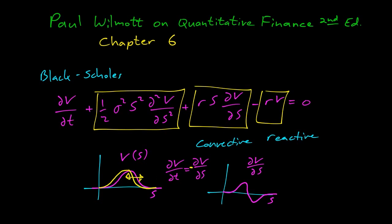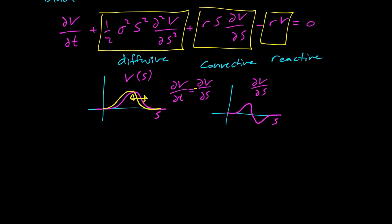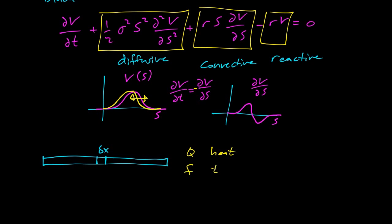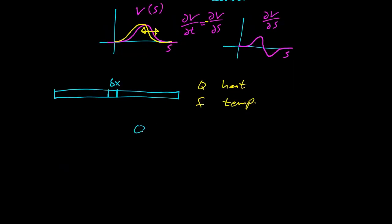The first term is a diffusive term — diffusion. From physics, consider a one-dimensional bar with a small piece of width delta x. There's q measuring heat and f measuring temperature. The simplest relation is q equals f times delta x. Taking the derivative with respect to time: partial of q with respect to t equals partial of f with respect to t times delta x.